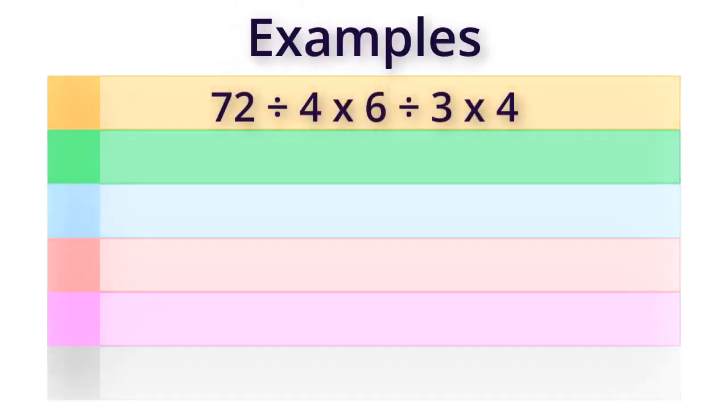Let's try some examples. This problem contains only multiplications and divisions. Since divisions and multiplications rank equally in importance, they must be worked in order beginning at the left and working to the right.